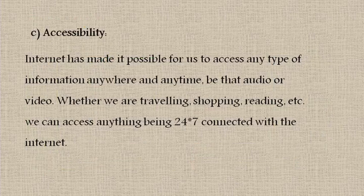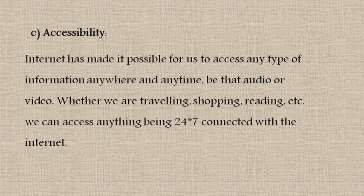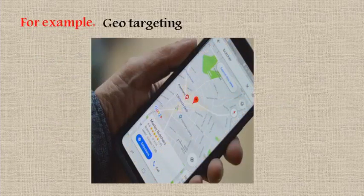Accessibility: the internet has made it possible for us to access any type of information anywhere and anytime — be that audio or video. Whether we are traveling, shopping, reading, etc., we can access anything being 24-7 connected with the internet. One example is geo-targeting, which keeps us connected and delivers advertisements whenever we are traveling to a nearby area.